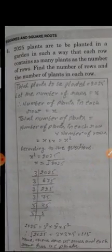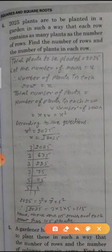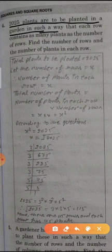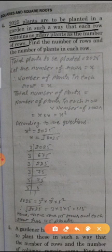Question number 4. 2025 plants are to be planted in a garden in such a way that each row contains as many plants as the number of rows. Find the number of rows and the number of plants in each row.